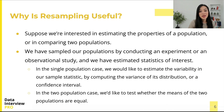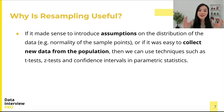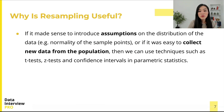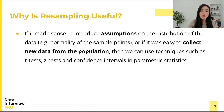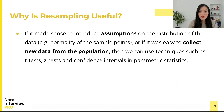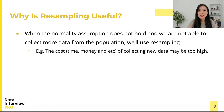In the two-population case, we'd like to test whether the means of the two populations are equal. If it made sense to assume normality of the sample points, or if it was easy to collect new data from the population, we would use techniques such as the t-test, z-test, and confidence intervals in parametric statistics.